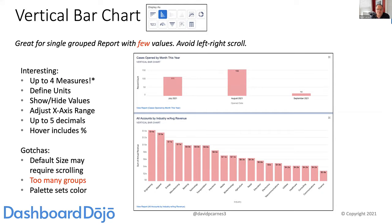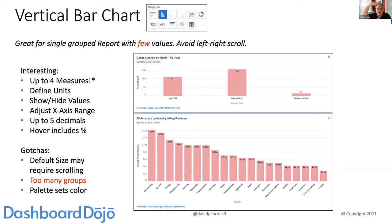Similarly, the second component type is a vertical bar chart. These are great for a single-group report with a few values. My suggestion is don't pick something with an unlimited number of values — like all the countries in the world — because it's going to be too wide and you'll have to scroll left and right. Something with three or ten values might be more appropriate. When you have many values, the labels start to go on diagonals and get truncated, and you have to make the dashboard component taller.